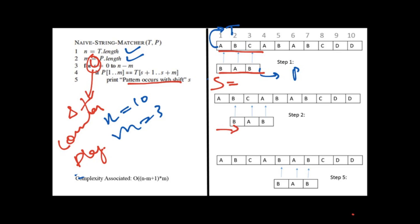That means now shift is equal to 2. We will again check if BCA is equal to BAB. We can see that it is not equal, so we will again put the shift to 3. When we put shift equal to 3, we can see there is CAB, which is again not matching with BAB. We will again move shift equal to 4.